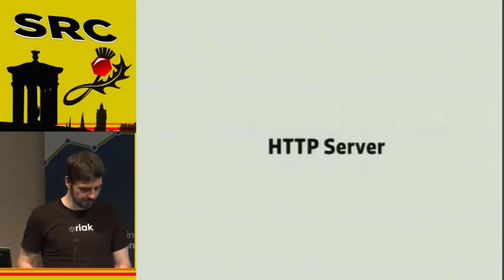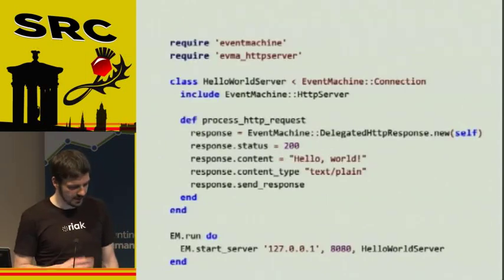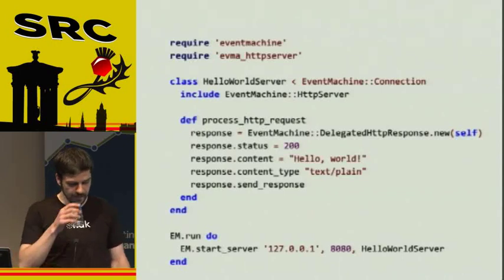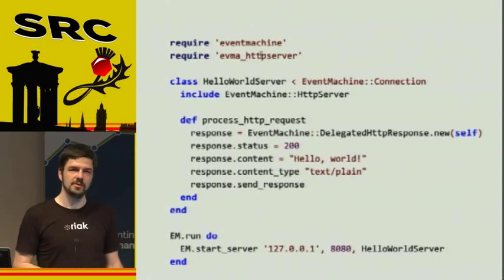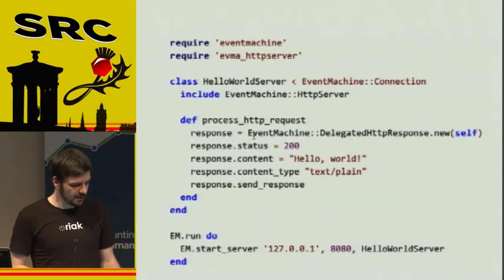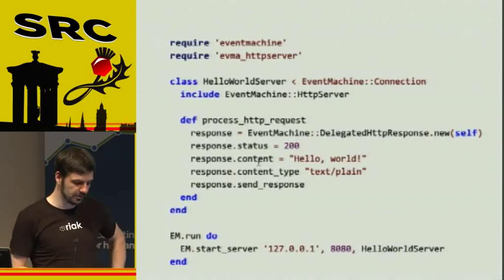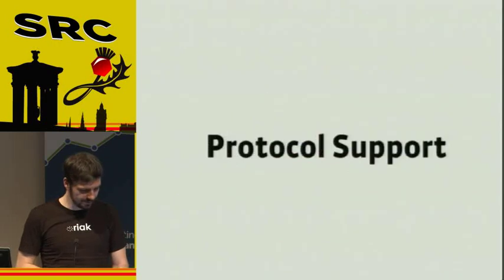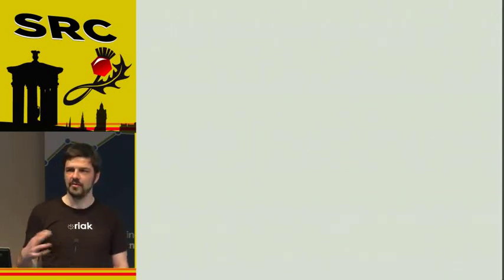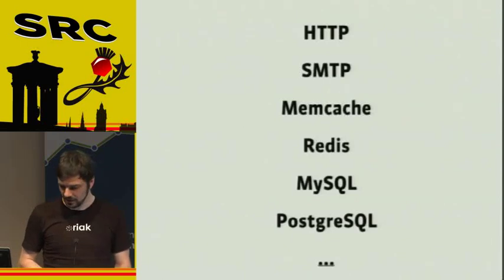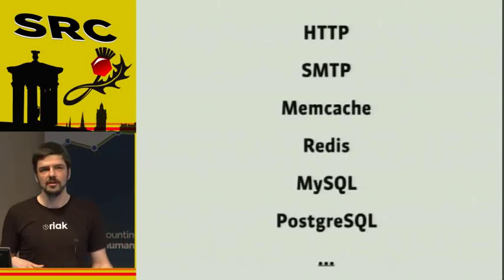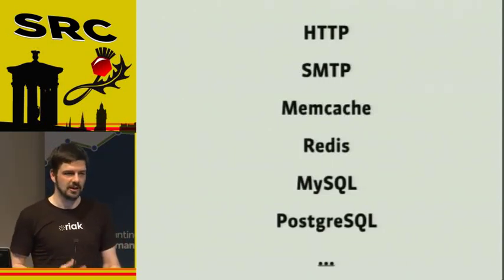When you wrap it in EM.run, an HTTP server in EventMachine would look like this. It uses a little library called EventMachine HTTP server, which is a C-based HTTP server. This is a basic example of how you would do a hello-world HTTP server. EventMachine supports out of the box a lot of protocols for client programming: HTTP, SMTP, Memcache, Redis, MySQL, Postgres, and a lot of other things. These all come with default EventMachine support, which you can use to talk to Memcache, your database, or whatnot.